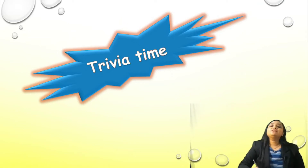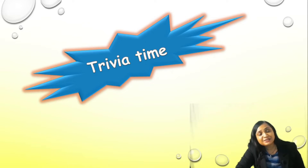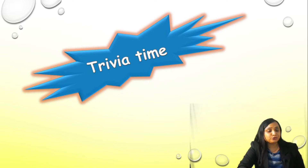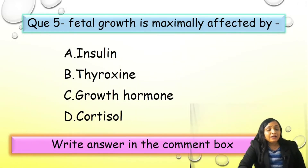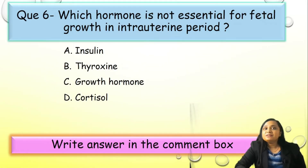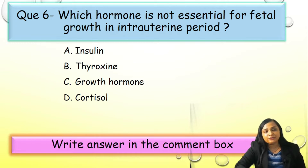After the hormonal influence discussion, we are going to have a trivia time. Question 5: fetal growth is maximally affected by — A) insulin, B) thyroxine, C) growth hormone, or D) cortisol. Question 6: which hormone is not essential for fetal growth in the intrauterine period? Options are A) insulin, B) thyroxine, C) growth hormone, or D) cortisol. Question 7: the hormone mainly responsible for skeletal maturation of the fetus is — A) testosterone, B) thyroxine, C) estrogen, or D) growth hormone.